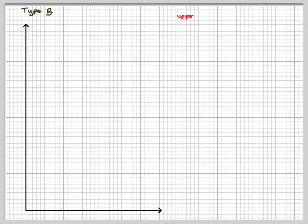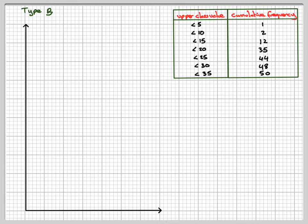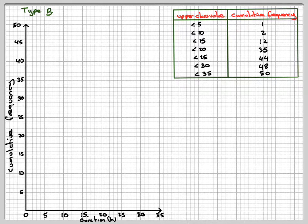Then we'll repeat the process for the second graph, plotting the points again: 5 and 1, 10 and 2, 15 and 12, 20 and 35, 25, 44, 30, 48, and then 35, 50, joining them up with the curve.